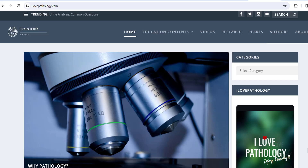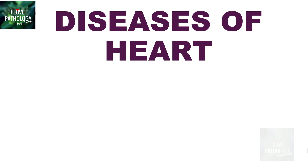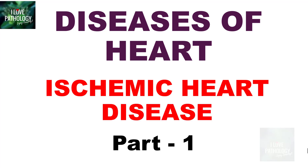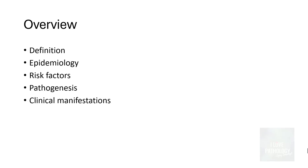Hi everyone, welcome back to this short tutorial from Pathology Made Simple at ilovepathology.com. Starting from today, let's learn a very important chapter in pathology: diseases of heart. This is a series covering most of the important topics in diseases of heart, and today is part one of ischemic heart disease, where we'll be looking at the definition, epidemiology, risk factors, pathogenesis and clinical manifestations of myocardial ischemia.